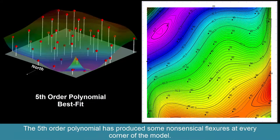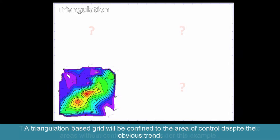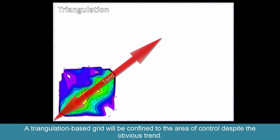To illustrate how trend-surface polynomials can be used to project trends into areas without control points, consider this example. A triangulation-based grid will be confined to the area of control despite the obvious trend.